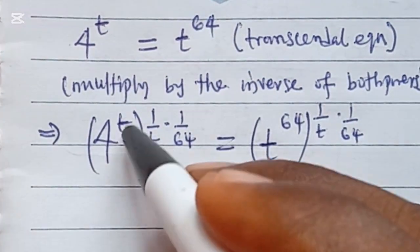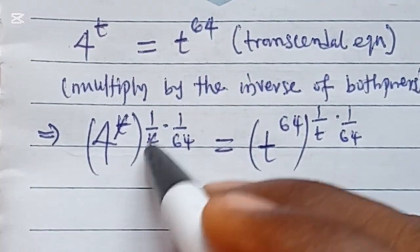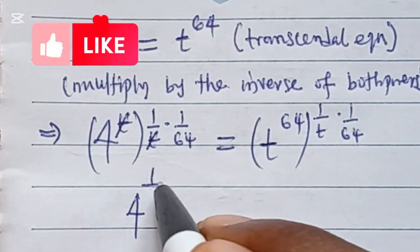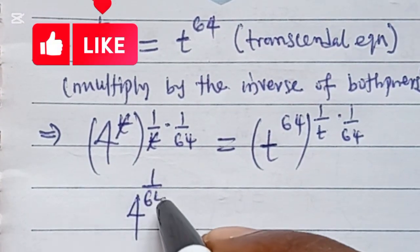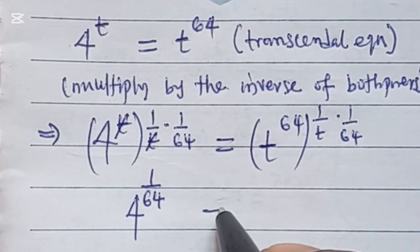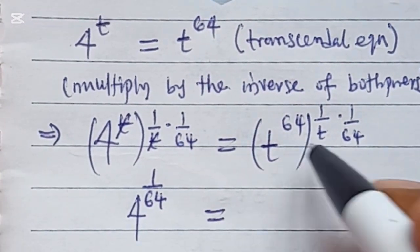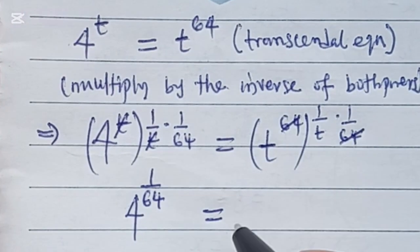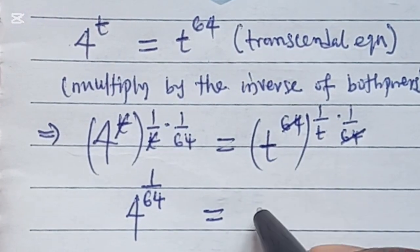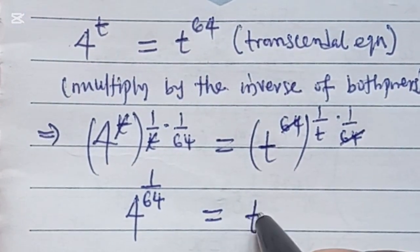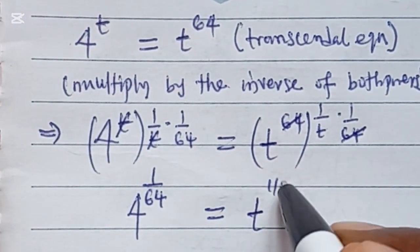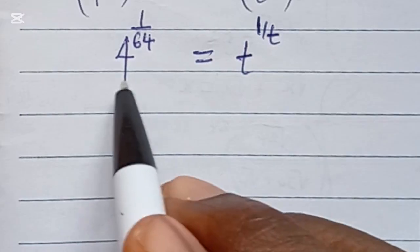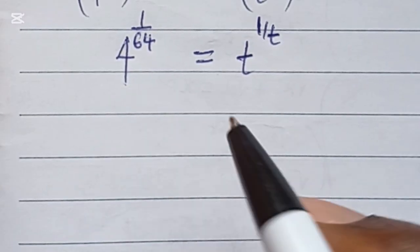When we do that, t cancels out t, and we are left with 4 to the power of 1 over 64. On the right-hand side, 64 cancels out 64, and we are left with t to the power of 1 over t. Just by doing this, we have been able to group this equation.